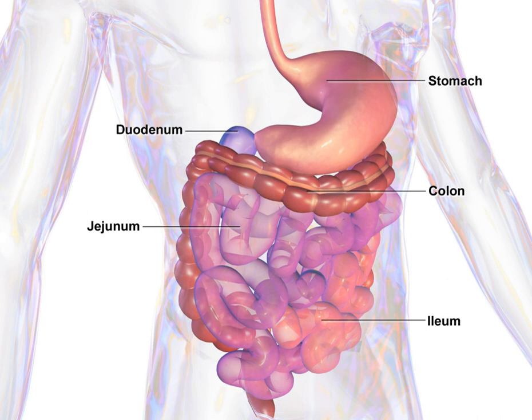The lower gastrointestinal tract includes most of the small intestine and all of the large intestine. In human anatomy, the intestine, bowel, or gut is the segment of the gastrointestinal tract extending from the pyloric sphincter of the stomach to the anus and, as in other mammals, consists of two segments: the small intestine and the large intestine. In humans, the small intestine is further subdivided into the duodenum, jejunum and ileum, while the large intestine is subdivided into the cecum, ascending, transverse, descending and sigmoid colon, rectum, and anal canal.